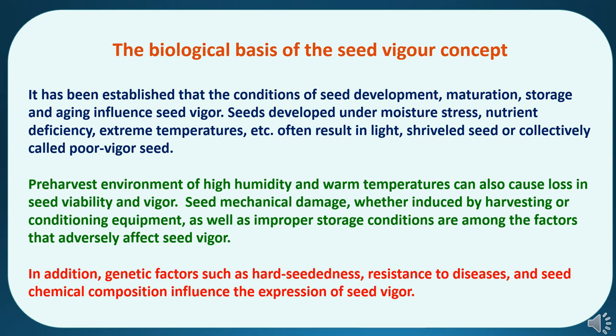Now, to study the biological basis of the seed vigor concept. It has been established that the conditions of seed development and maturation — including physiological maturity and harvest maturity — as well as storage and aging, influence seed vigor. Seeds developed under moisture stress, nutrient deficiency, or extreme temperatures often result in light, shriveled seeds, collectively called poor vigor seed. Pre-harvest environments of high humidity and warm temperatures can also cause loss in seed viability and vigor. Seed mechanical damage, whether induced by harvesting or conditioning equipment, as well as improper storage conditions, are among the factors that adversely affect seed vigor. In addition, genetic factors such as hard seededness, resistance to diseases, and seed chemical composition also influence the expression of seed vigor.